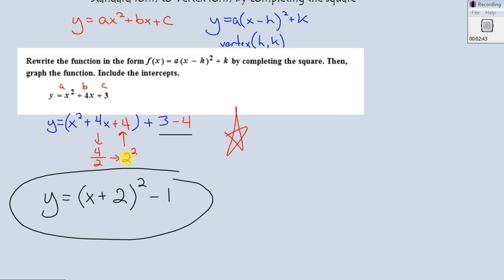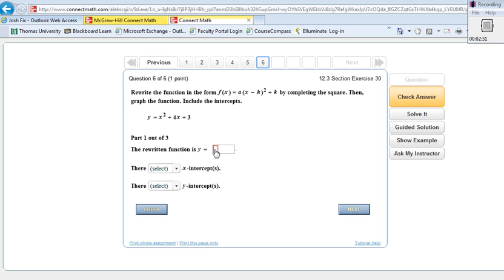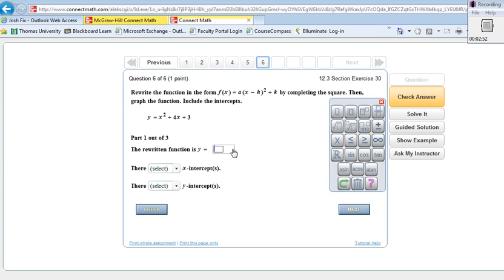Okay, so let's take and put that into our problem. All right, so that was open parenthesis, not z, Josh, but x plus 2. Close parenthesis. Squared, arrow over, minus 1. My x-intercept and my y-intercepts. Okay, so let's go take a look at those real quick.